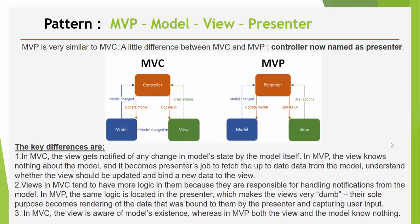MVP is very similar to MVC. A little difference between MVC and MVP is that the Controller is now named as Presenter. And you see here there is no link between Model and View. So in MVC, the Model was able to change the View, but in MVP, the Model and View know each other only through the Presenter. So in MVC, the View gets notified of any changes in model state by the model itself. In MVP, the View knows nothing about the Model. It becomes the Presenter's job to fetch up-to-date data from the Model, understand whether the View should be updated, and bind new data to the View.